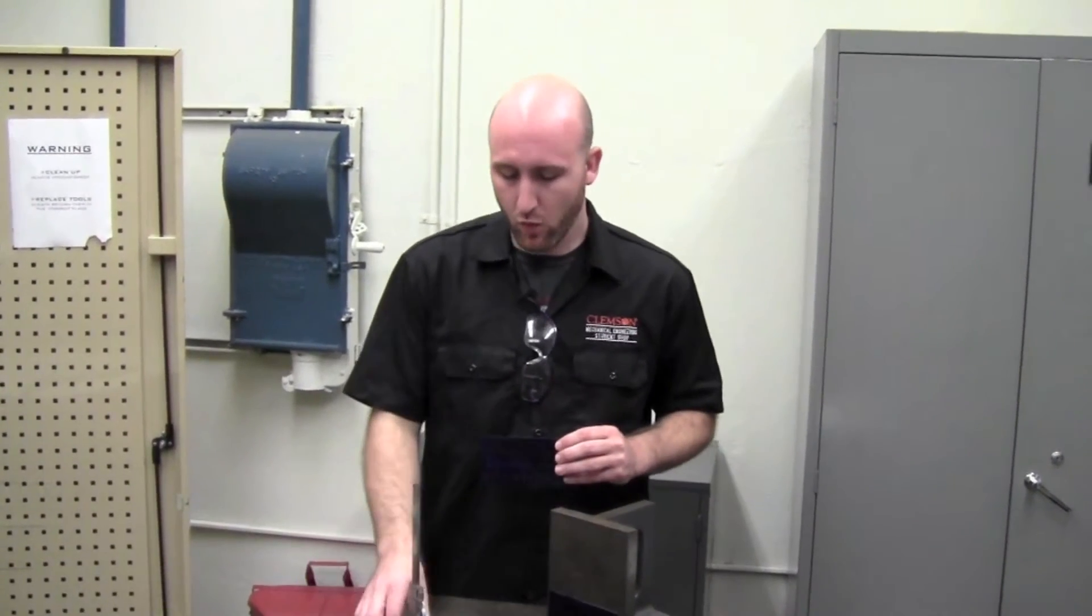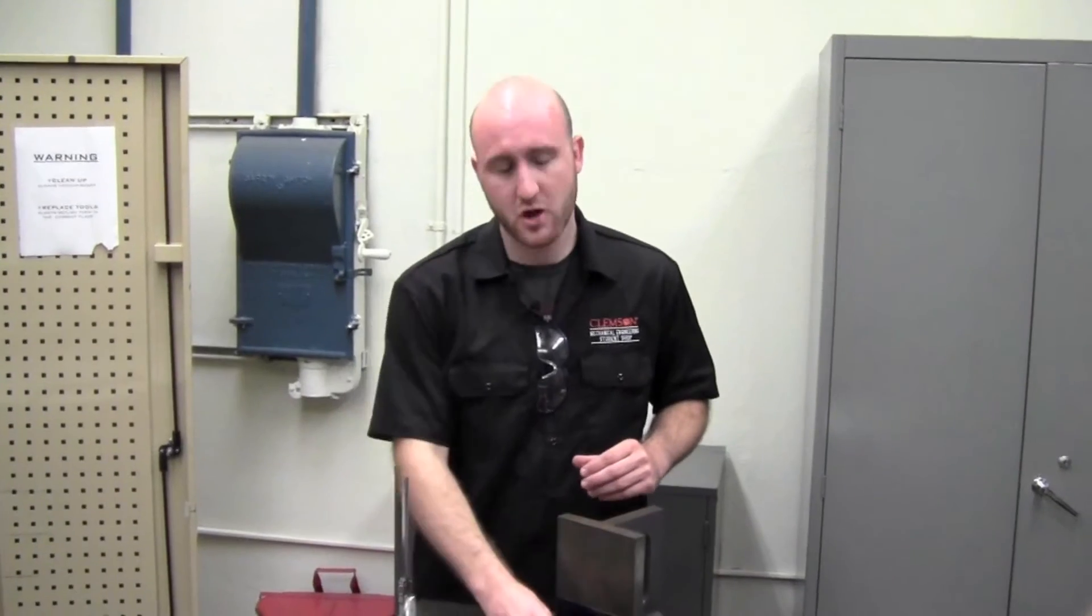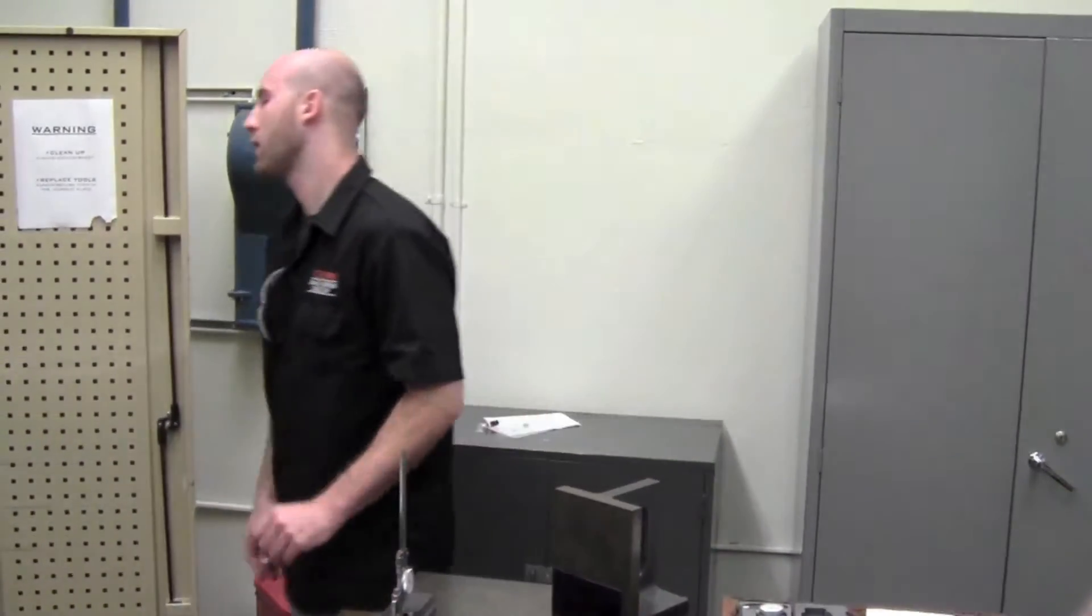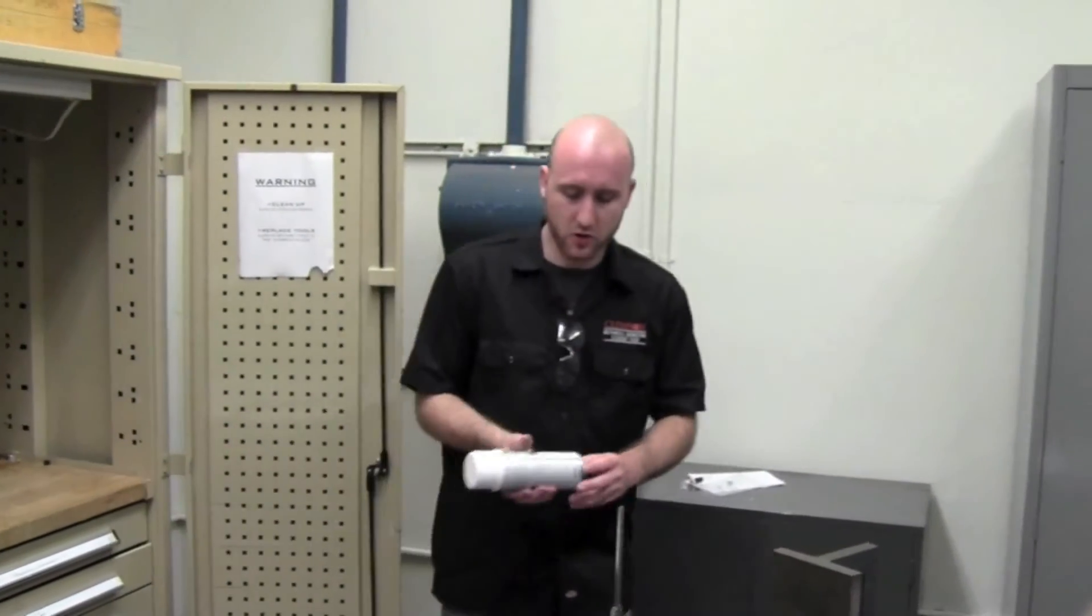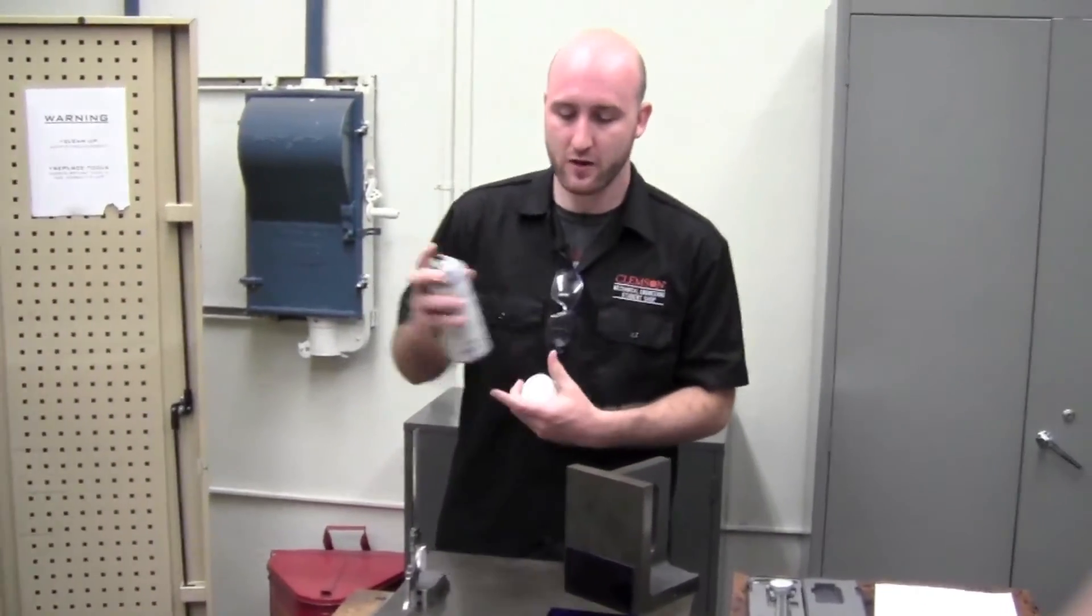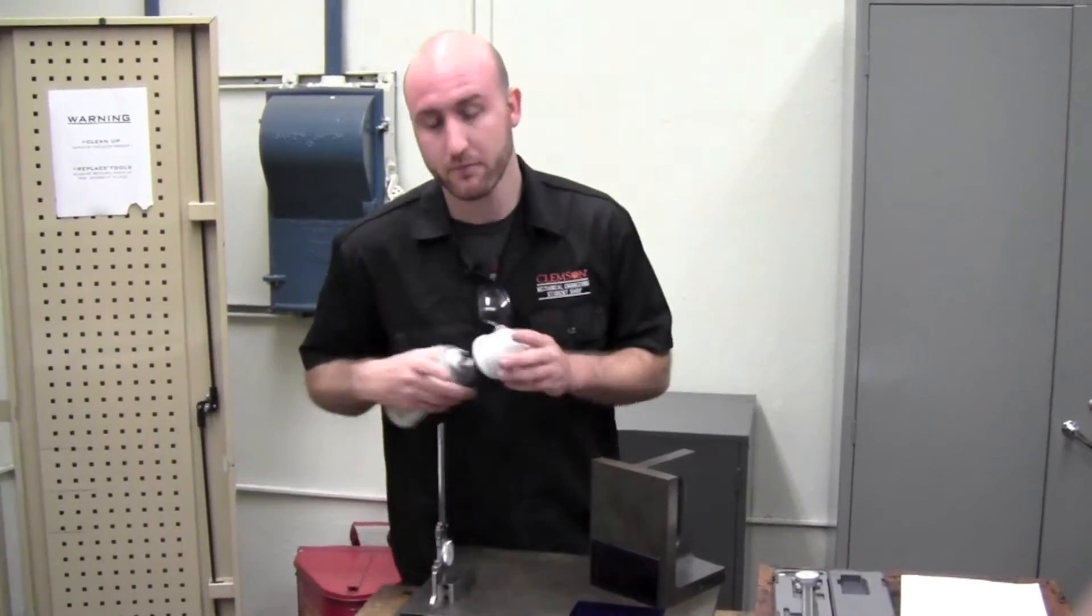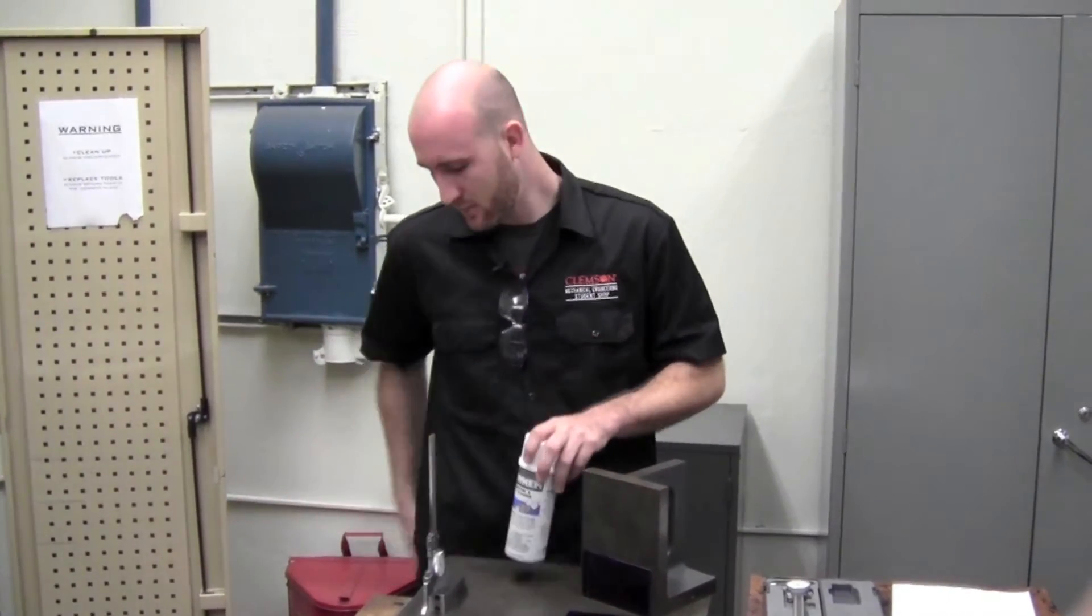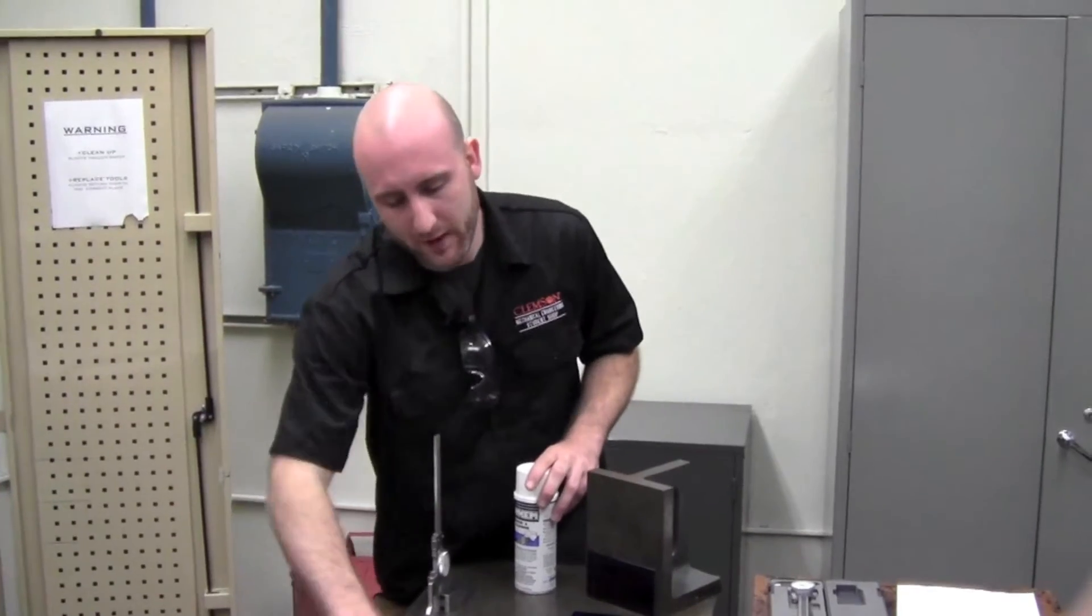Be sure that when you're done working in your area, that there's no layout dye on any of the surface plates or tools. If you do make a mess, you can use layout dye cleaner here. You can just spray it on top of your surface plate, and then use a rag to wipe away the layout dye.